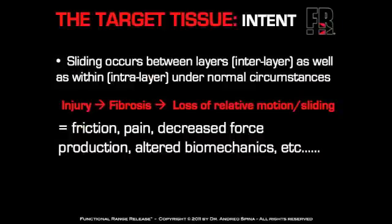The second way it differs is in terms of intent. We just talked about how the fascia and the anatomy of the fascia has certain layers. We have fascia superficialis on top of fascia profunda. Sliding occurs between these layers. When superficial fascia slides on top of profunda fascia, we refer to this as interlayer sliding — a very important concept.